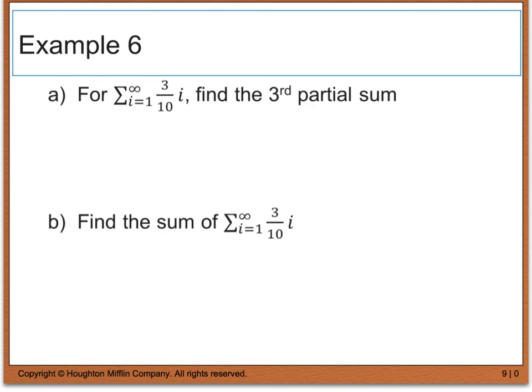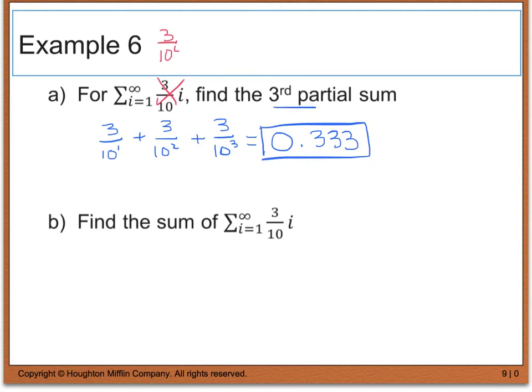So for our last example, we're going to find the sum from i equals 1 to infinity of 3 divided by 10 to the power of i. We want to find what we call the 3rd partial sum. So that 3rd partial sum tells me that this is going to be a finite summation because I'm going to add the first term plus the second term plus the third term. So that's going to look like 3 divided by 10 to the 1st plus 3 divided by 10 to the 2nd plus 3 divided by 10 to the 3rd. Now if you type this in your calculator, you will find that you will get 0.333 as a final answer for your 3rd partial sum.